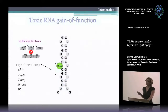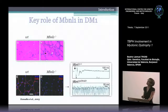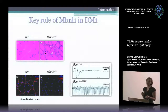We are mostly interested in muscle-blind-like, which is MBNL1. This is the human ortholog of fly muscle-blind, and it has been shown to have a key role in DM1. The knockout mice show the same histopathology as patients, showing central nuclei, and also loss of chloride channel expression, which leads to myotonia.